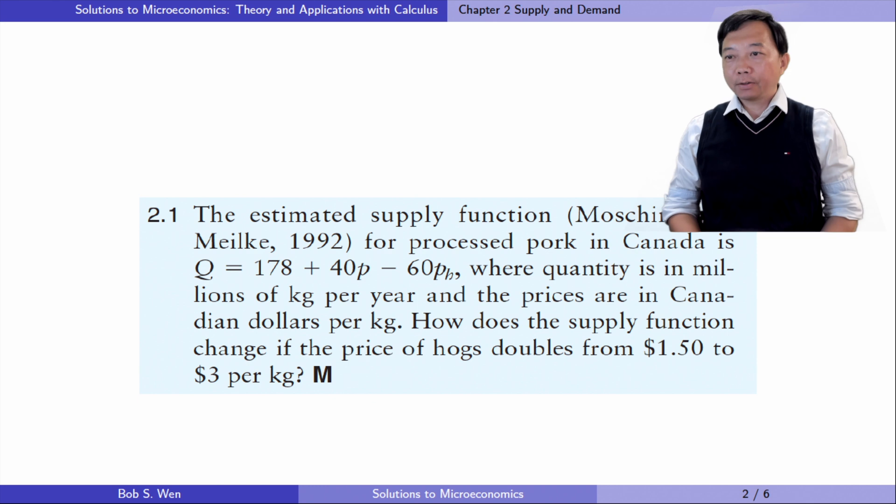Let's solve exercise 2.1. The estimated supply function for processed pork in Canada is q equals 178 plus 40 times p minus 60 times pH, where quantity is in millions of kilograms per year and the prices are in Canadian dollars per kilogram. How does the supply function change if the price of hocks doubles from 1.5 dollars to 3 dollars per kilogram?